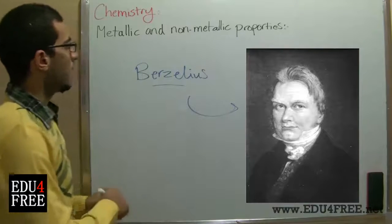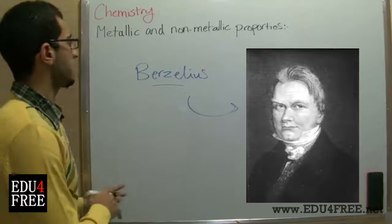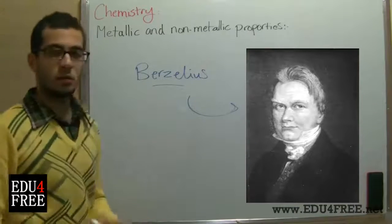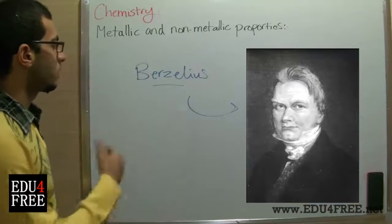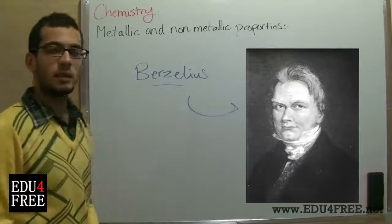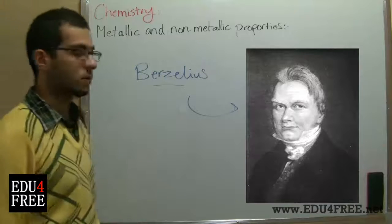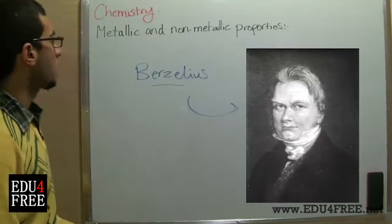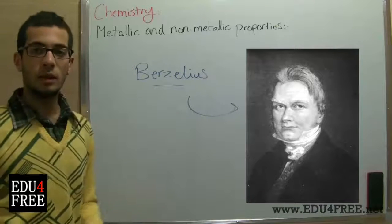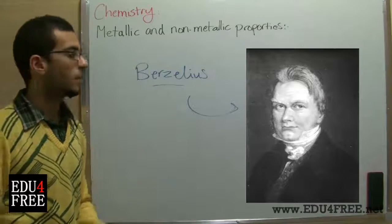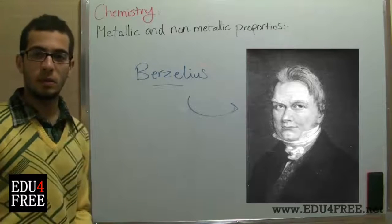At the time of Verzilius, the differences between metals and non-metals were not clear enough as nowadays due to the development and the advancement in the science of chemistry. So now we will know the differences between metals, non-metals, and metalloids and how they are classified in the periodic table.